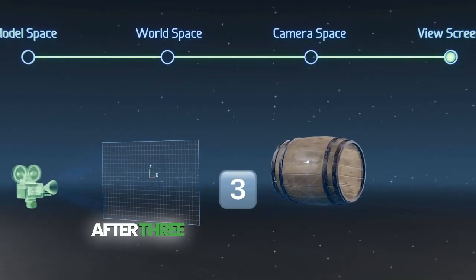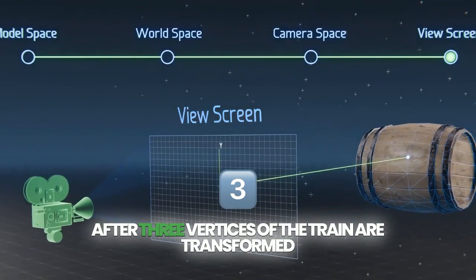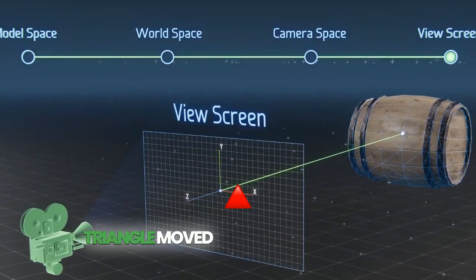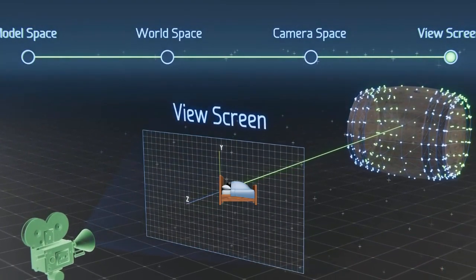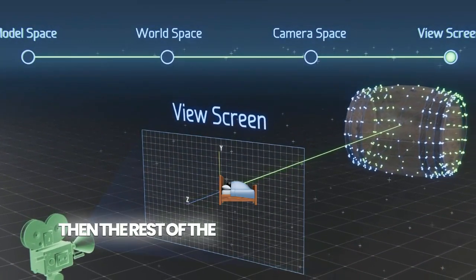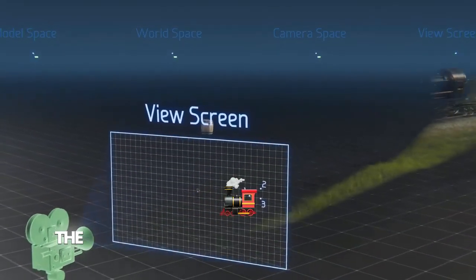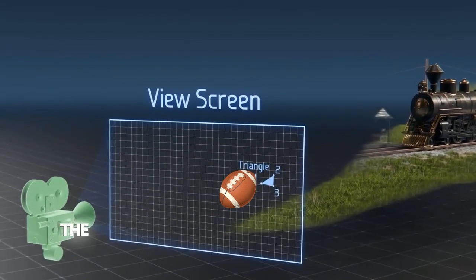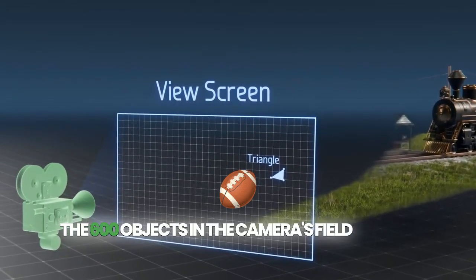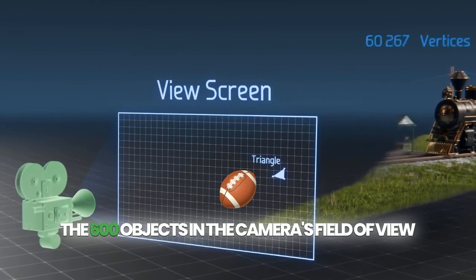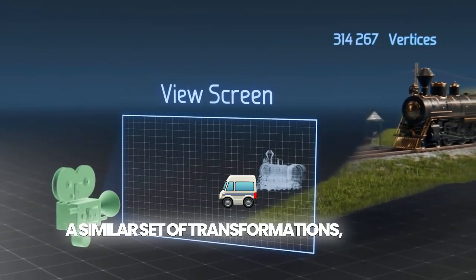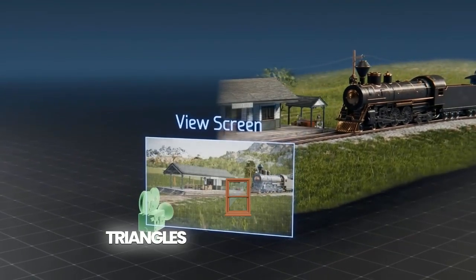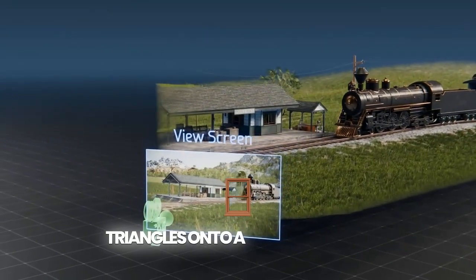After three vertices of the train are transformed using similar matrix math, we get a single triangle moved onto the view screen. Then the rest of the 382,000 vertices of the train, and the 2.1 million vertices of all the 600 objects in the camera's field of view, undergo a similar set of transformations, thereby moving all 3.5 million triangles onto a 2D view screen.